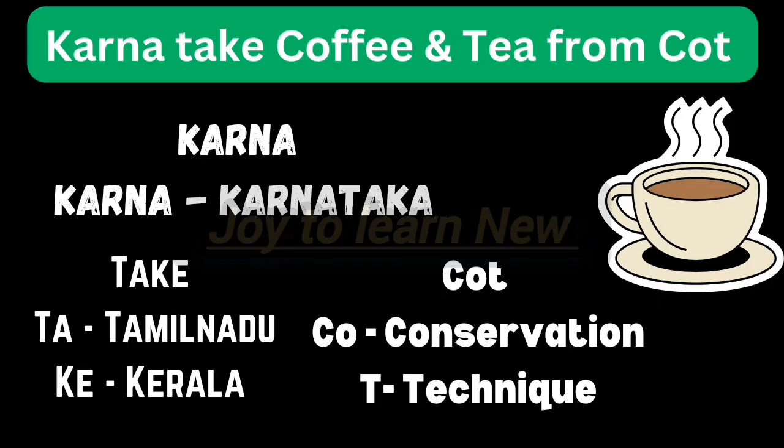The next shortcut is: 'Karna take coffee and tea from cot.' Karna refers to Karnataka. 'Take' — TA refers to Tamil Nadu, KE refers to Kerala. This soil is very useful for growing tea and coffee. From 'cot' — CO represents conservation, T represents technique. After adopting conservation techniques, coffee and tea are grown in this soil, particularly in Karnataka, Tamil Nadu, and Kerala.